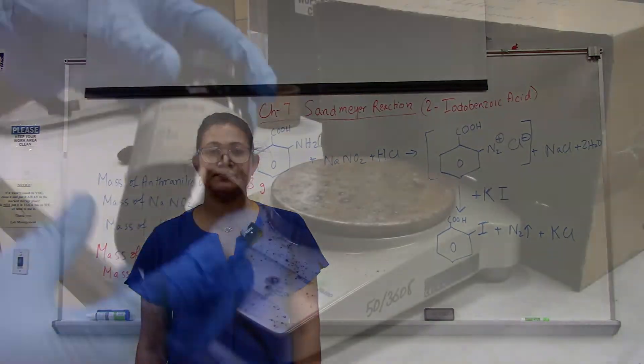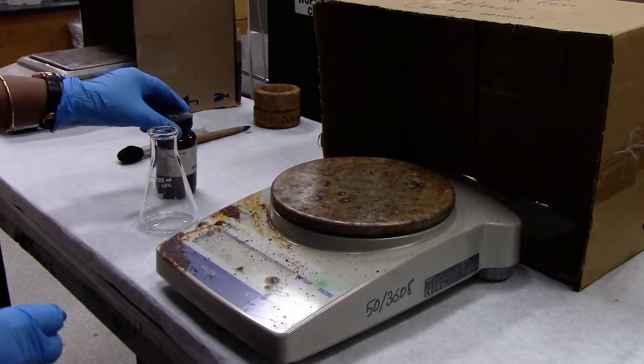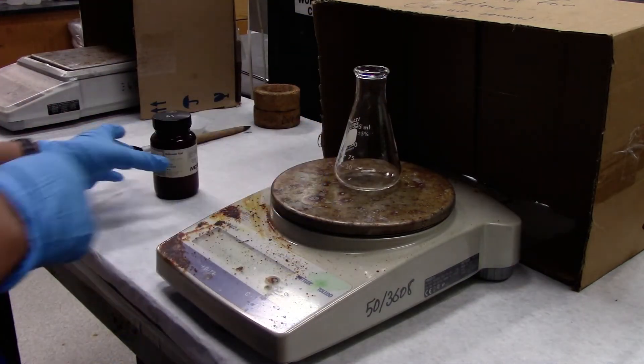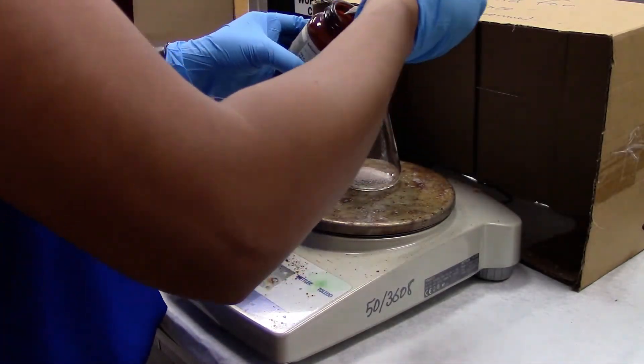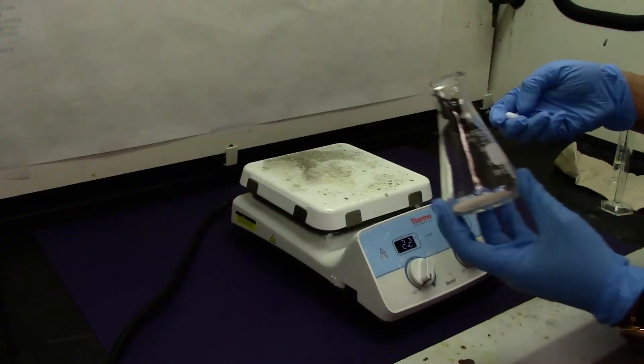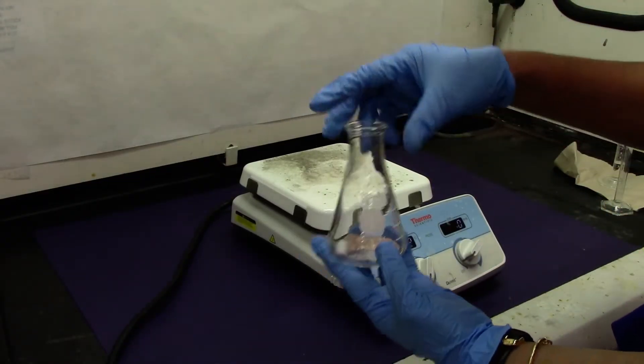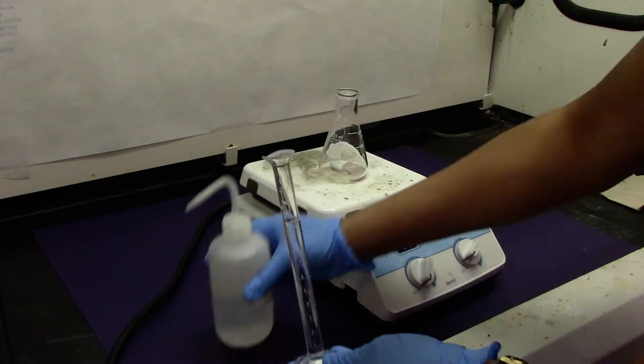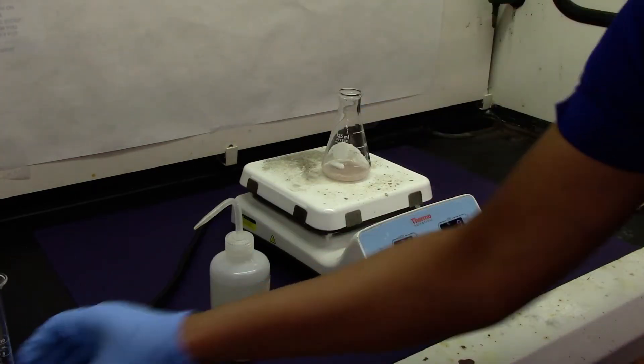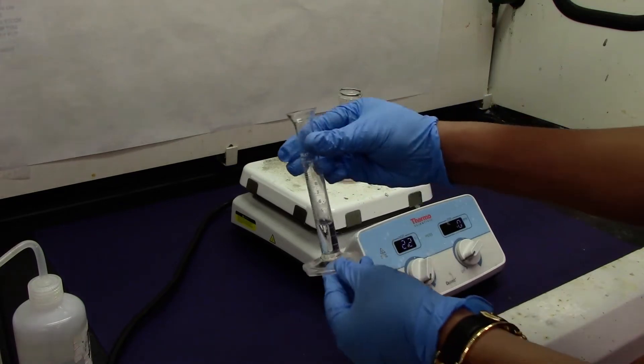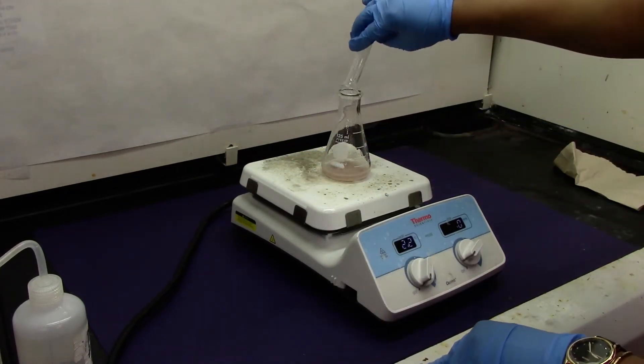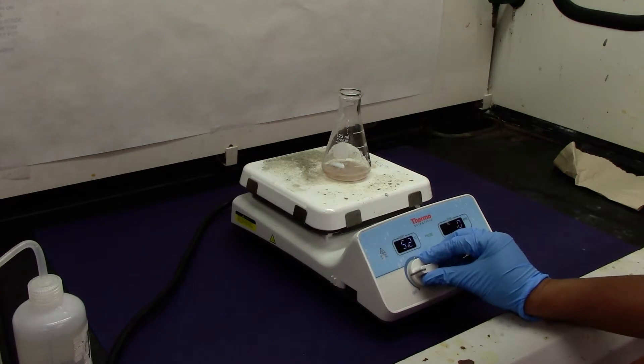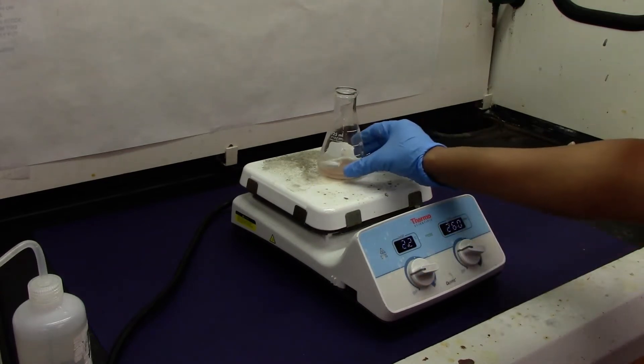Let's go ahead and set up the reaction. We'll start with measuring anthranillic acid. I'm using a 125 mL Erlenmeyer flask. We'll tare the Erlenmeyer flask to zero. To my flask I'm going to add a stir bar. I need about 10 milliliters of DI water added to anthranillic acid, and then I have 3 milliliters of concentrated hydrochloric acid. Once we add all of these we will gently start heating and stirring to make it a homogeneous solution.